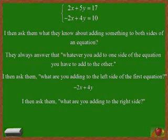I then ask them, well what are you adding to the right side of the first equation? And they correctly answer, 10. So they're adding negative 2x plus 4y to the left side of the first equation, and 10 to the right side.